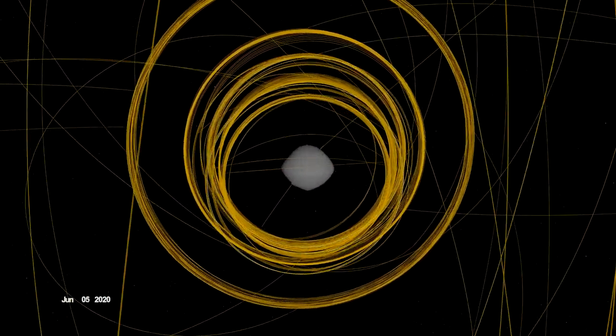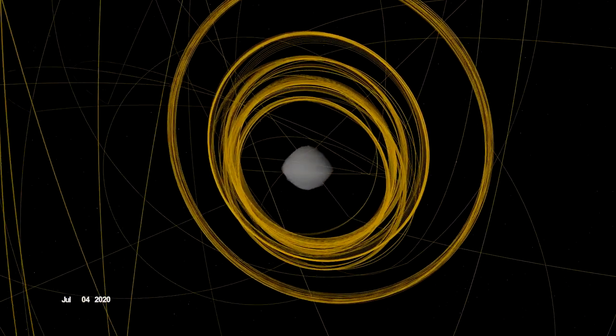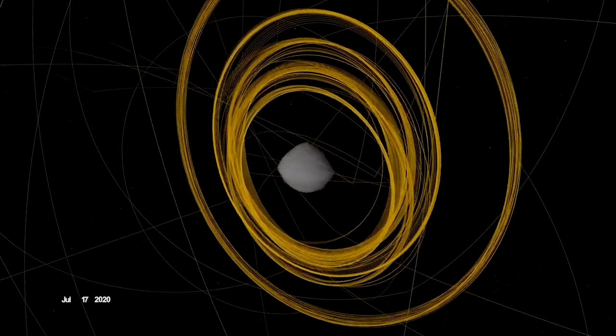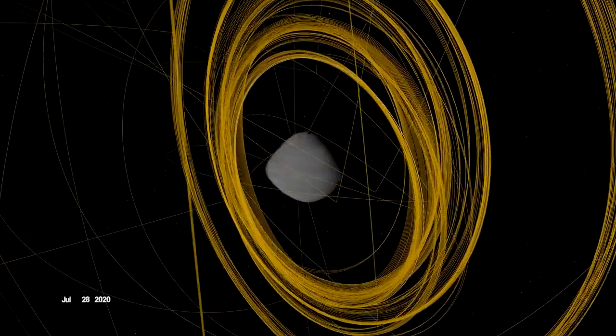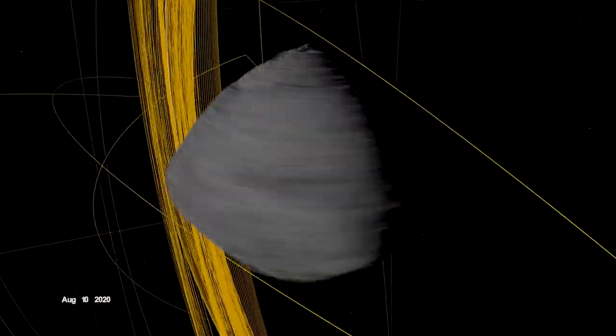After the checkpoint rehearsal, OSIRIS-REx flew one final reconnaissance sortie over site Osprey. Then it made a series of high-altitude maneuvers while rebooting its onboard processor and preparing for its second rehearsal of the sample collection event.